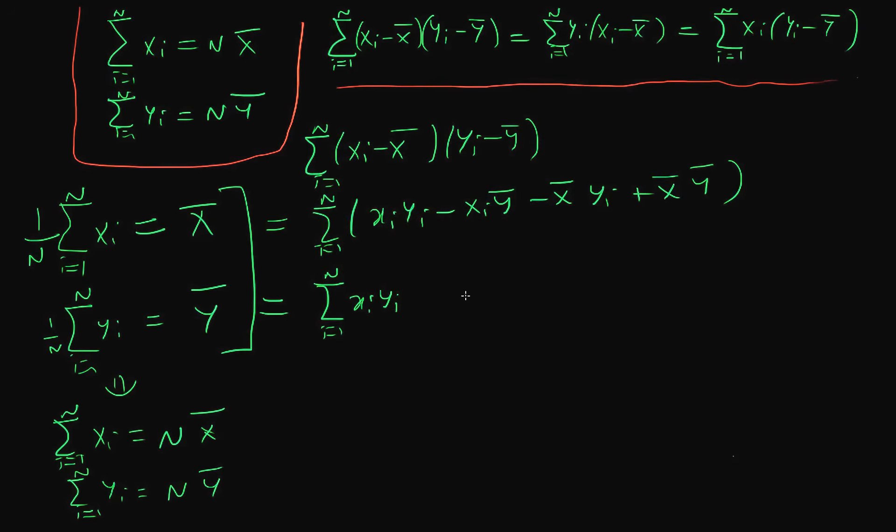That's the sum from i equals 1 to n of xi times yi minus, well I can take the y bar out of the sum because it doesn't have any i index on it. So that's the sum from i equals 1 to n of xi times y bar. Again for the next term, I can take the x bar out because it doesn't have any summation index on it. So that's the sum of i equals 1 to n times yi times x bar on the outside of the summation sign.